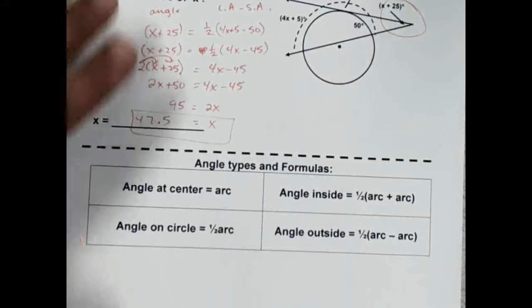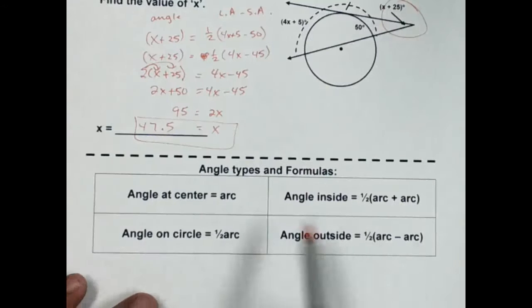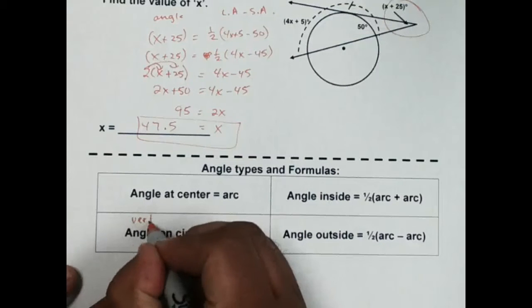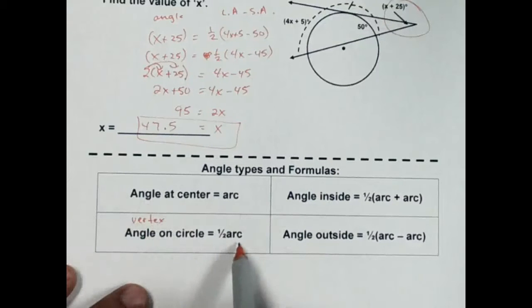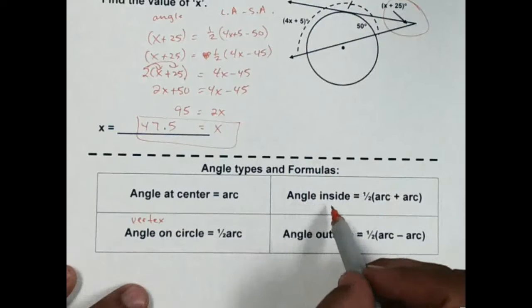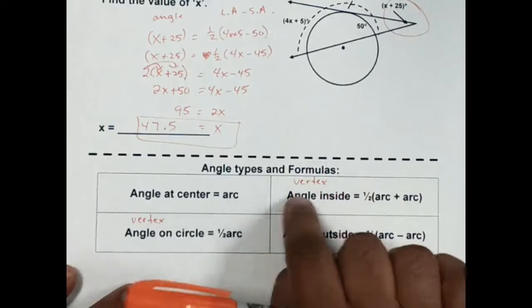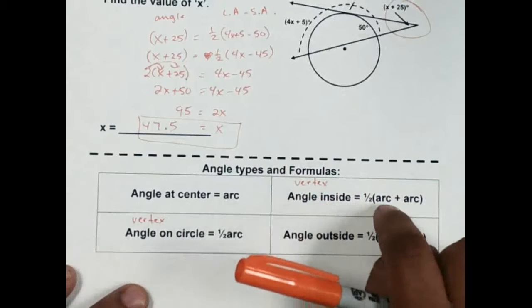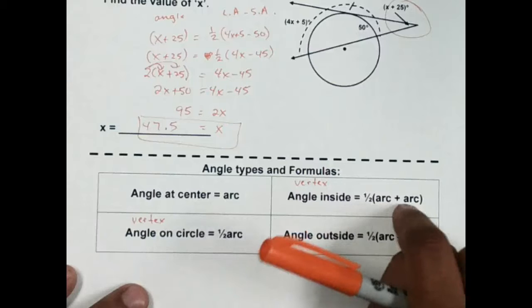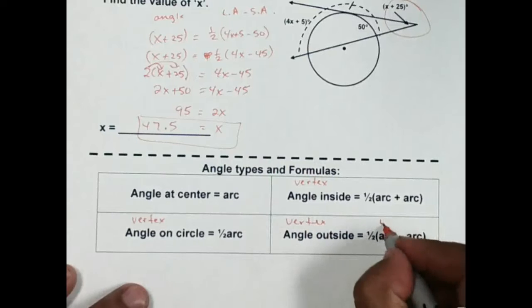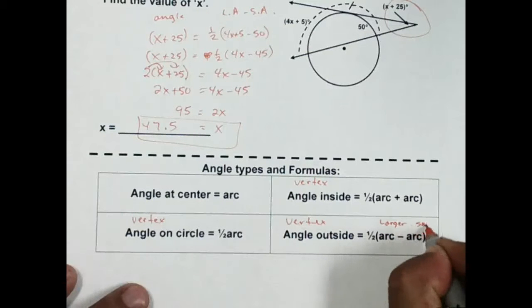All right. And then at the end, I went ahead and kind of gave you a summary of these different theorems. If the angle's at the center, it's equal to the arc. If the vertex is on the circle, it's half the arc. If the vertex is on the inside, it's equal to one half the sum of the intercepted arcs. If the vertex is on the outside, the angle is equal to one half the larger arc minus the smaller arc. Thank you.